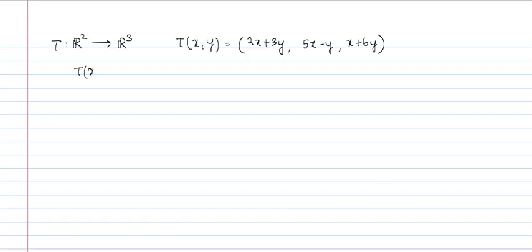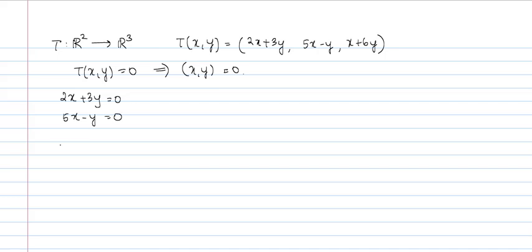We need to check if T(x, y) equal to 0 implies (x, y) equal to 0. So T(x, y) equal to 0 gives us: 2x plus 3y equal to 0, 5x minus y equal to 0, and x plus 6y equal to 0. We need to check if these equations have x equal to 0 and y equal to 0 as the only solution. From the second equation, we have 5x equal to y, and from the third equation, we have x equal to minus 6y.